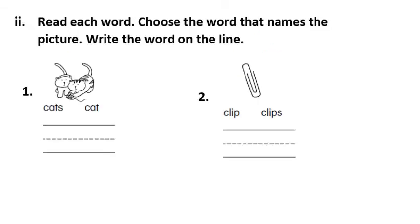Read each word. Choose the word that names the picture. Write the word on the line. Now here I have two cats. When I have more than one, I add S to the end. The right answer is cats. After I circle it, I write cats.